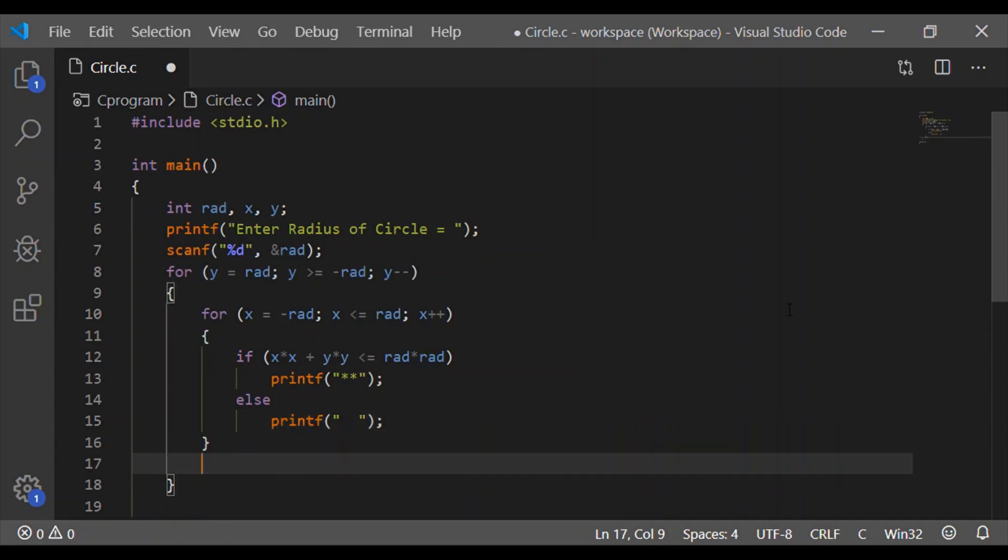If the condition is not satisfied, that means the point is outside the circle, then we will give the space. At the end of each row, that is after the for loop, let us introduce a new line statement.